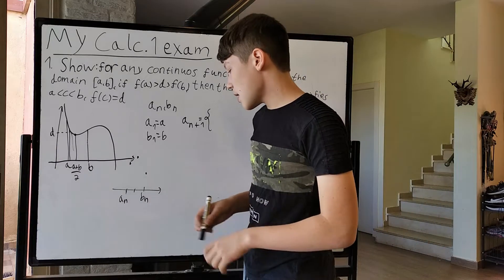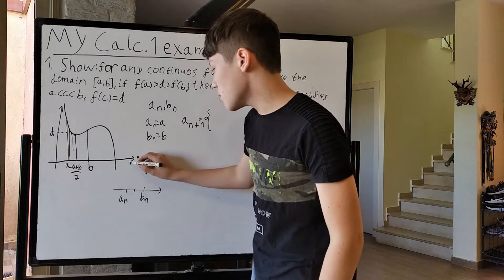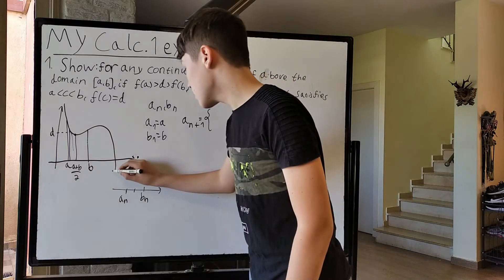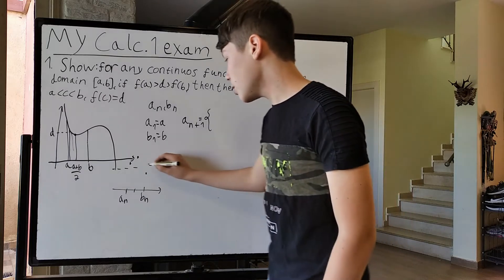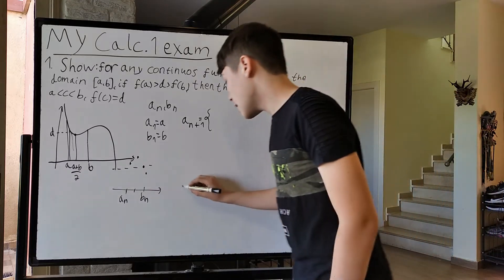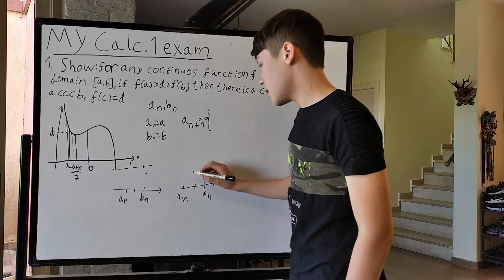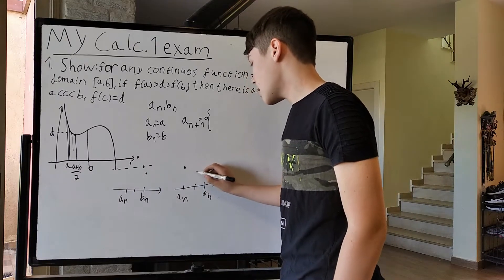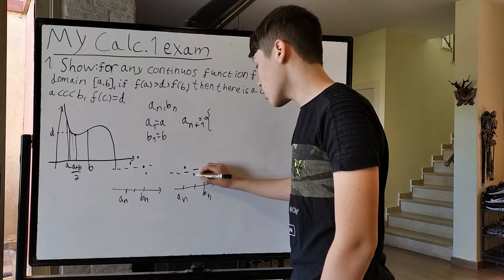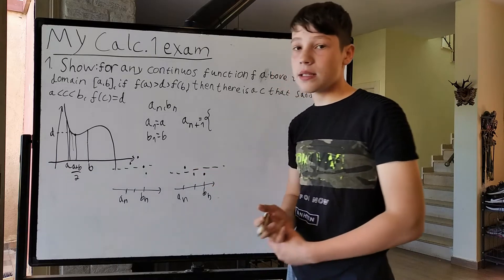So we know d is somewhere between f(a_n) and f(b_n). If d is in the upper portion, it'll have to be between (a_n + b_n)/2 and b_n — that's the case where f((a_n + b_n)/2) is bigger than d. In the other case, f((a_n + b_n)/2) is lower than d, so c will have to be between a_n and (a_n + b_n)/2.